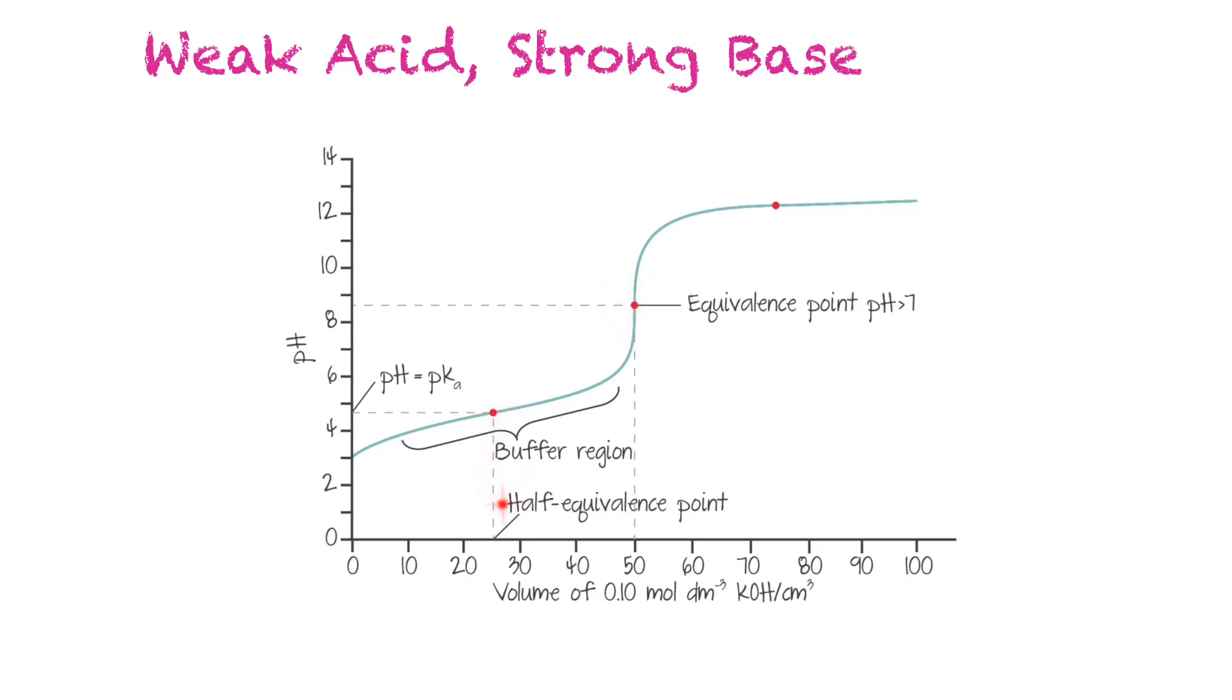The midpoint right here is known as the half equivalence point, and that represents when half of the volume has been added to reach that equivalence point. So half the acid has been neutralized at this point, and this makes a very good buffer solution. The pH at this half equivalence point is also known as the pKa, the equilibrium constant for the acid.